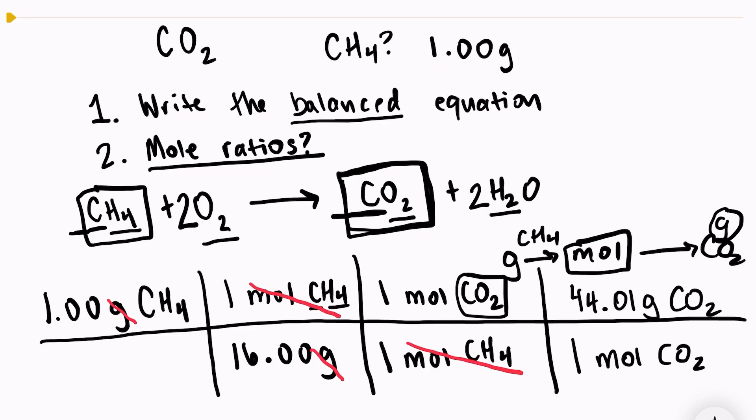And then remember, we multiply everything that's on the top of our fraction. And we divide everything that's on the bottom. So you would have 1.00 times 44 divided by 16, which will equal 2.75 grams of carbon dioxide.